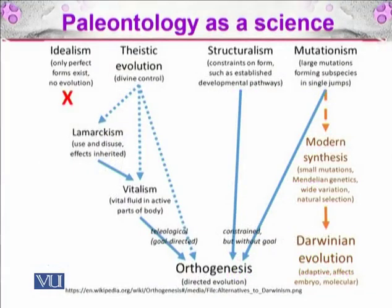In the last slide, you can see the different ideas throughout time: idealism, which holds that some perfect organism existed as we are today; theistic evolution; structuralism; and mutationism. But today, the most accepted idea is Darwinian evolution.